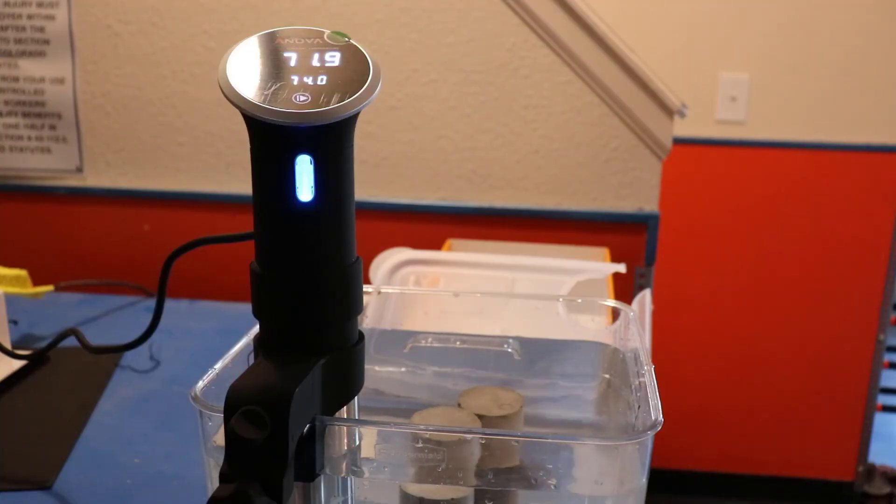First we have to create a warm water bath to place our vials in. I'm using a sous vide, which is an electric cooker that keeps the water at a consistent temperature. The spec says to keep the water between 23 degrees Celsius plus or minus 0.5 degrees Celsius, which comes out to between 72.5 degrees and 74.5 degrees Fahrenheit. So I set the temperature to 74 degrees Fahrenheit.